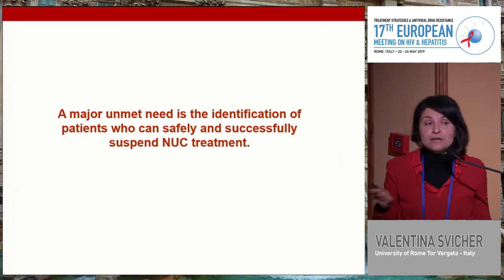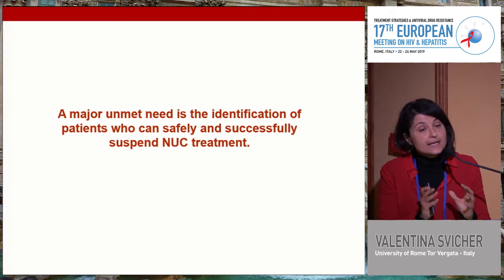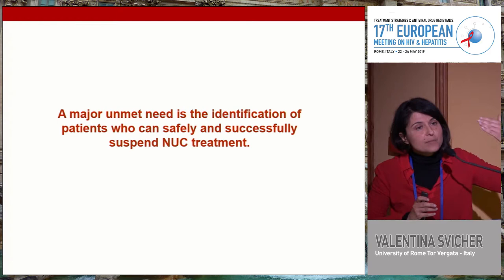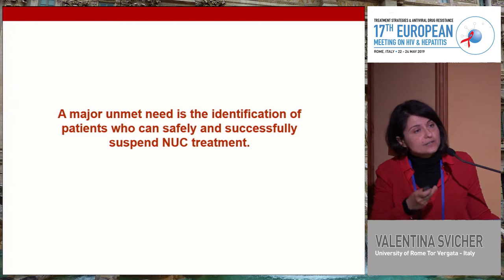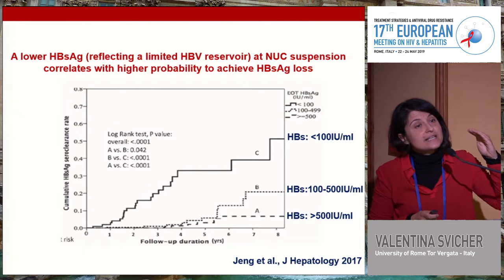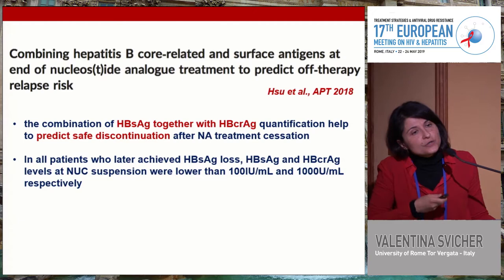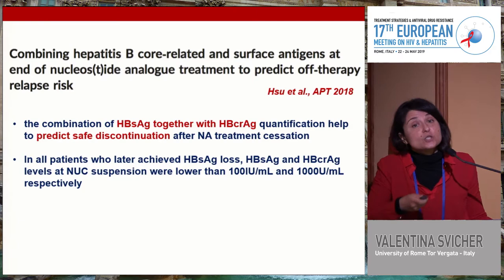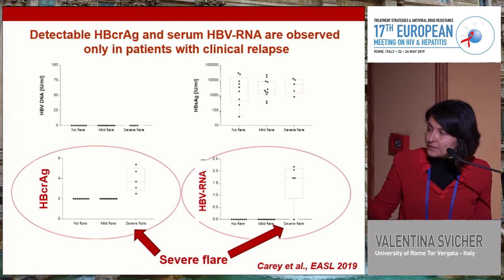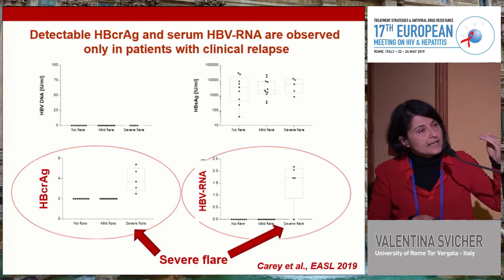In the setting of NUC suspension, we have the diagnostic objective to identify patients who can safely suspend NUC treatment without experiencing important rebound in serum HBV DNA and important flares in transaminases. Different studies show that a low HBsAg at NUC suspension correlates with a higher rate of HBsAg loss, and this prediction seems to be improved when HBsAg is combined with core-related antigen.